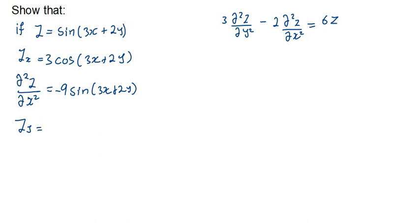What about the first derivative with respect to Y? The 3X will be a constant now. We differentiate 2Y, which gives us 2, then cos of 3X plus 2Y. Finding the second partial derivative with respect to Y gives us minus 4 sine of 3X plus 2Y.